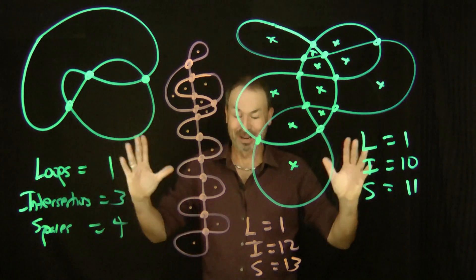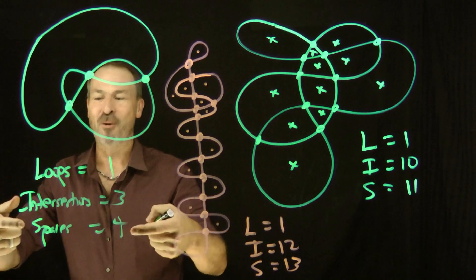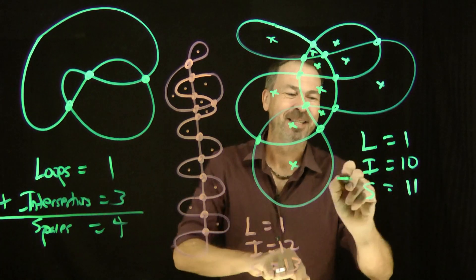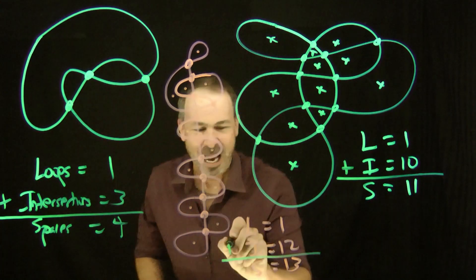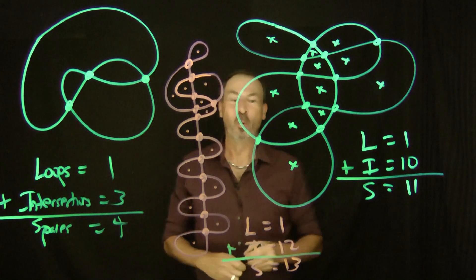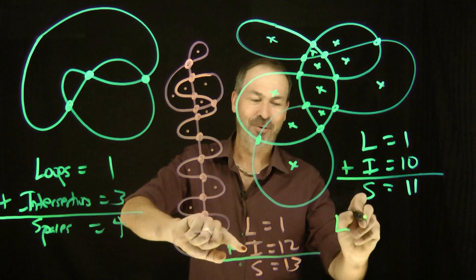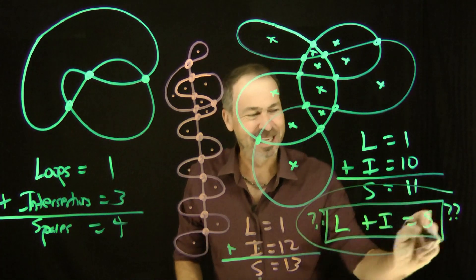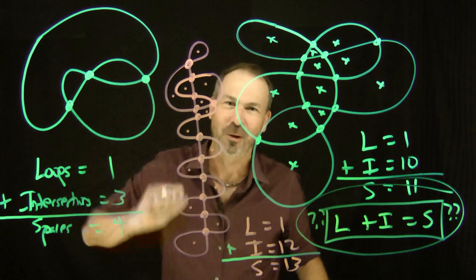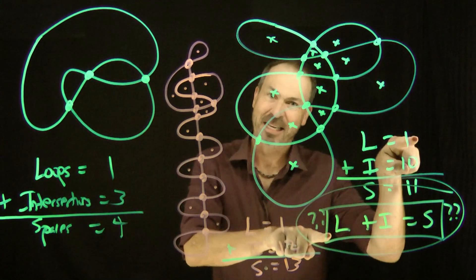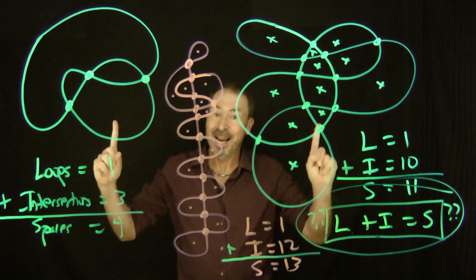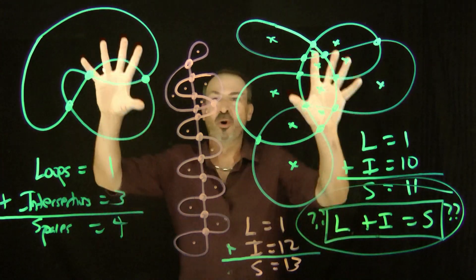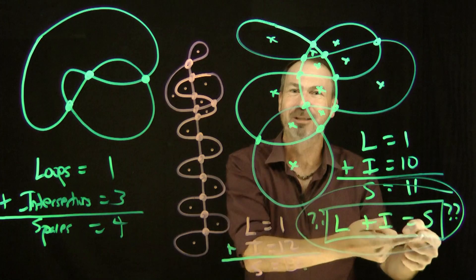I'm starting to notice something about these numbers. Look at this: one loop, three intersections, four spaces — one plus three equals four. One loop, ten intersections, eleven spaces — one plus ten equals eleven. One loop plus twelve intersections gives thirteen spaces. It looks like loops plus intersections equals the number of spaces. There is my conjecture, there is my theory. I'm wondering if that's actually true — is it true for every possible picture of a loop? Or was I just being sneaky and happened to choose three examples that by coincidence happened to work? Give this a try yourself — draw some nice loops and check this theory. Does loops plus intersections equal spaces?